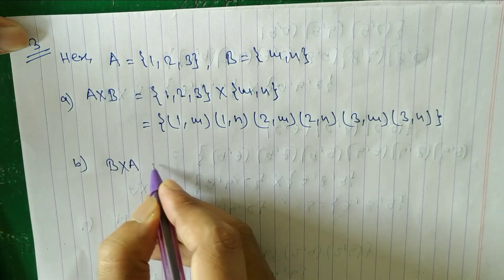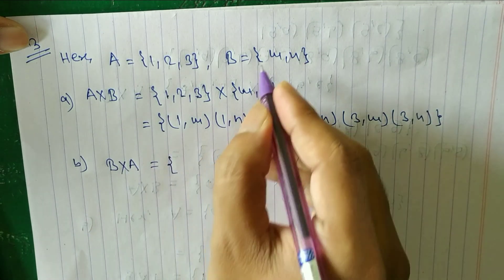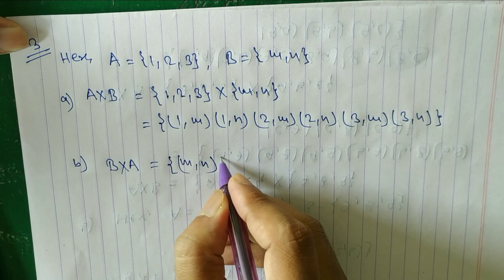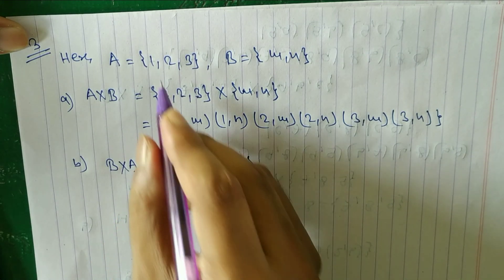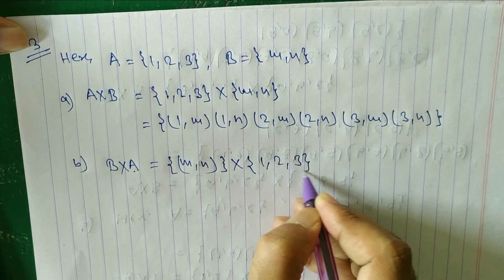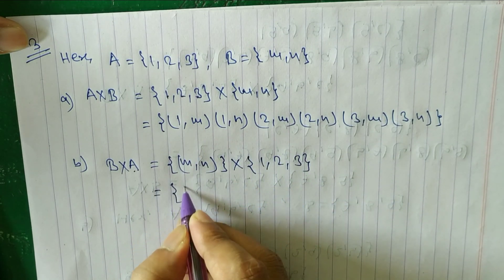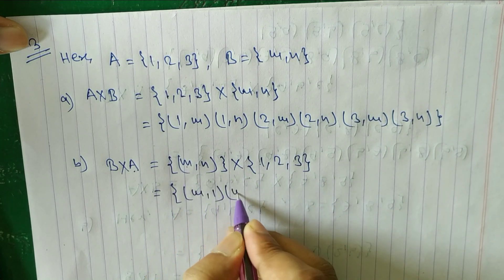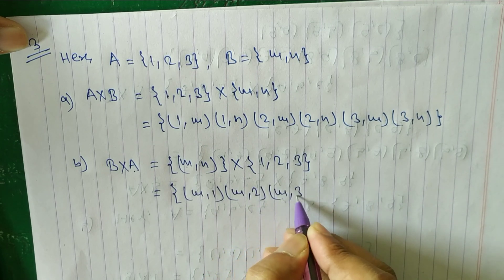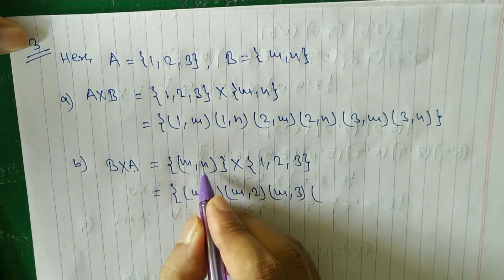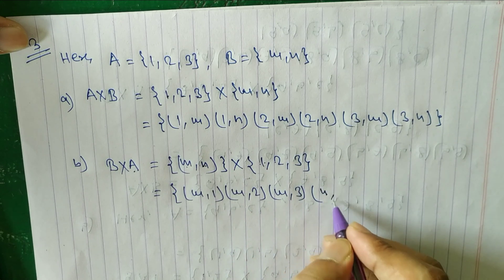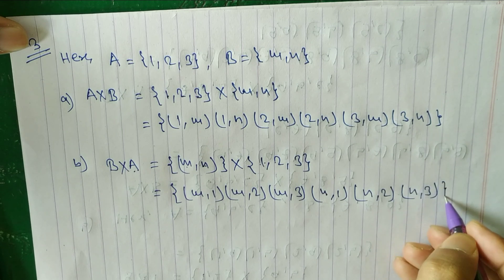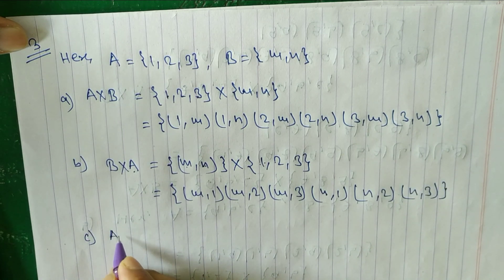For part b, b×a: b = {m, n} cross a = {1, 2, 3} gives (m,1), (m,2), (m,3), (n,1), (n,2), (n,3).